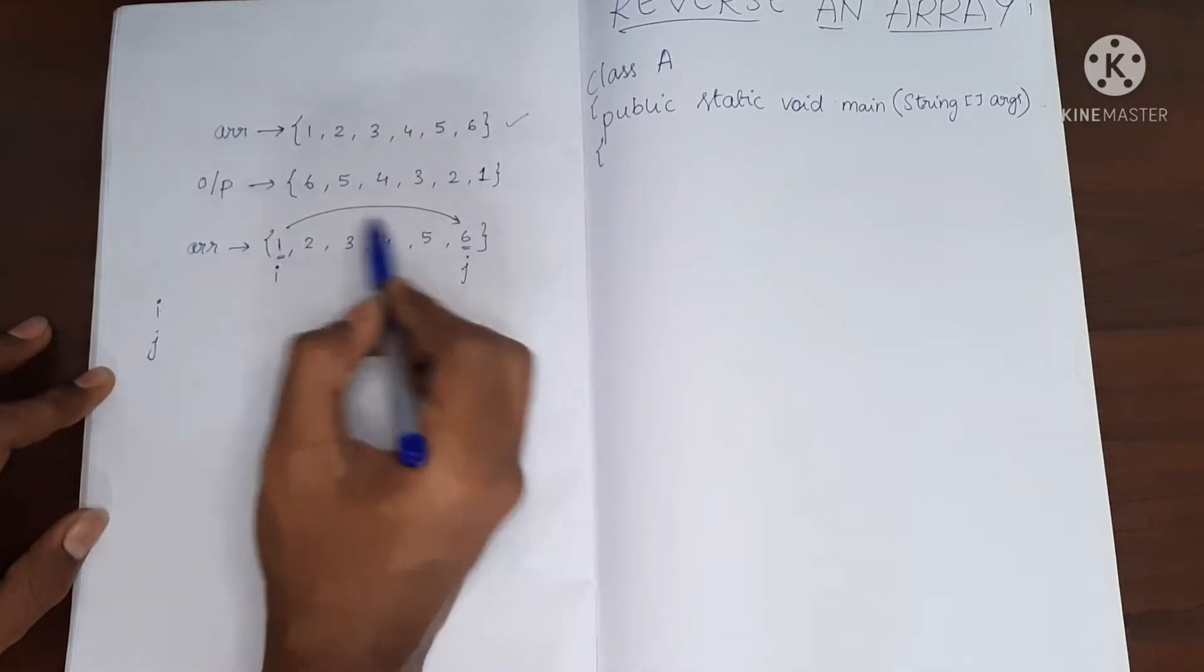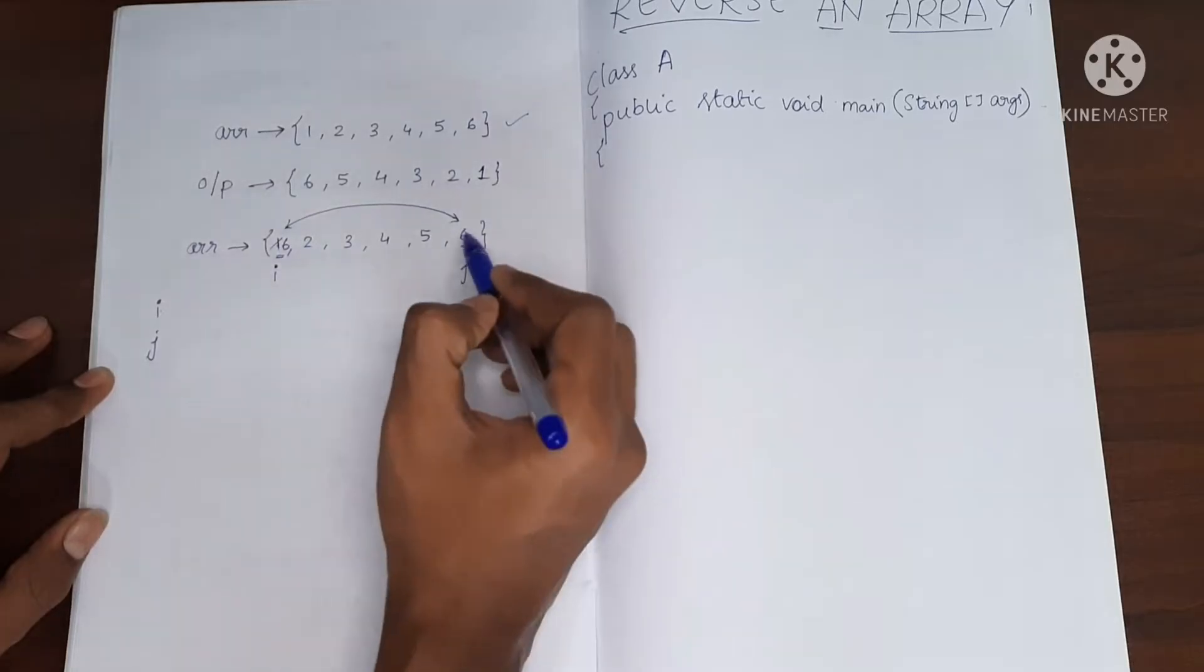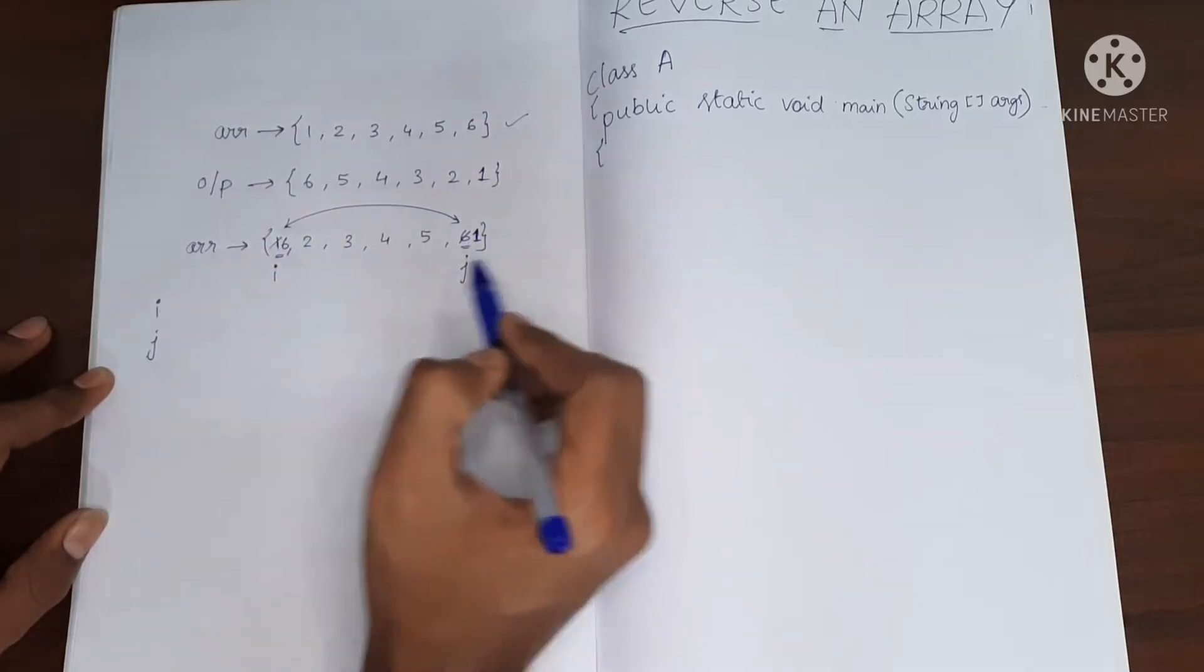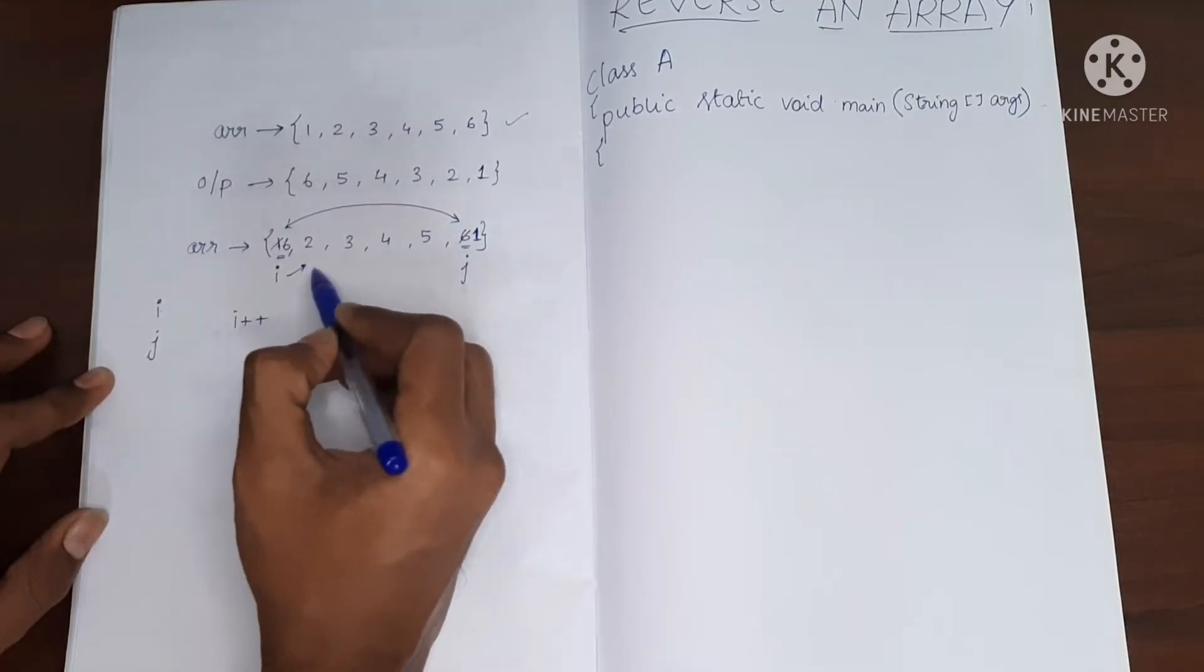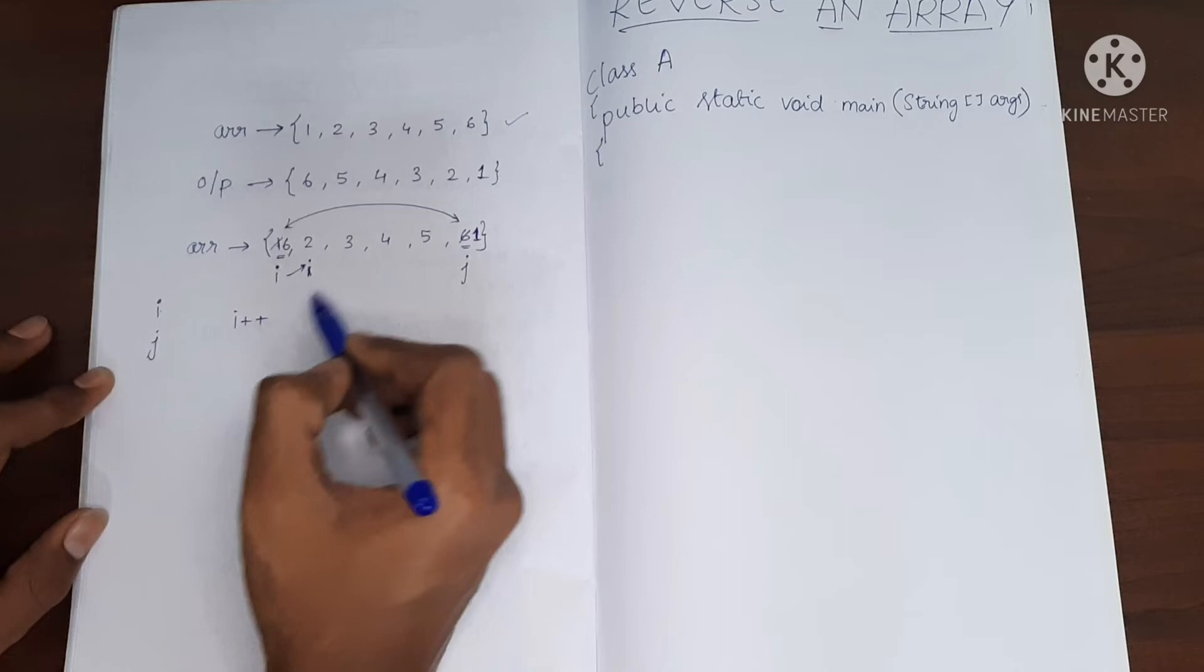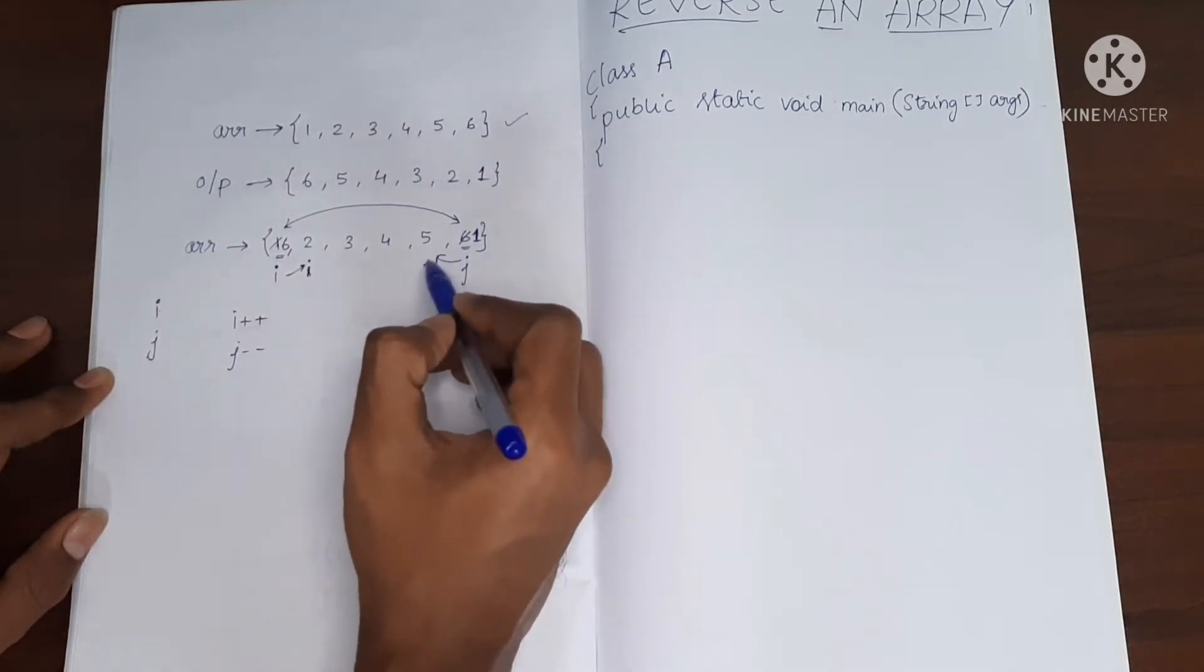So I'm going to swap these two. So now this will become six and this will become one. Now I'll increment i by one. So i will now move to here.